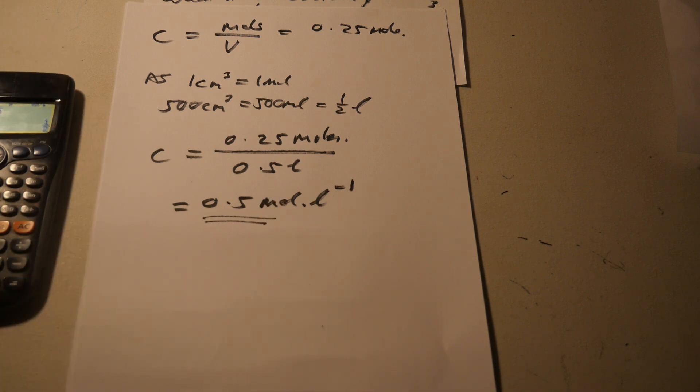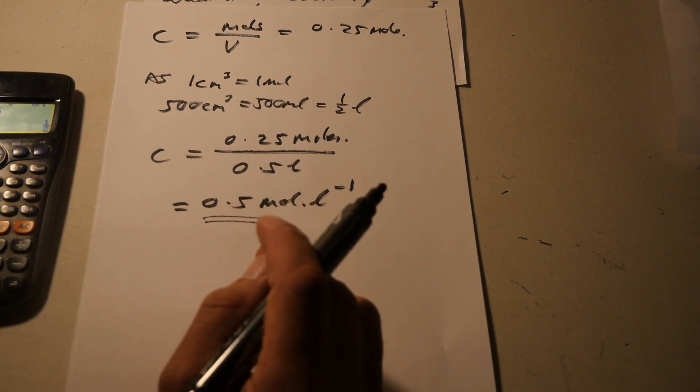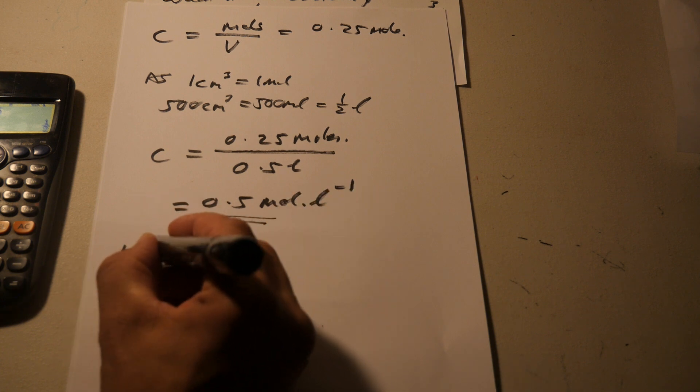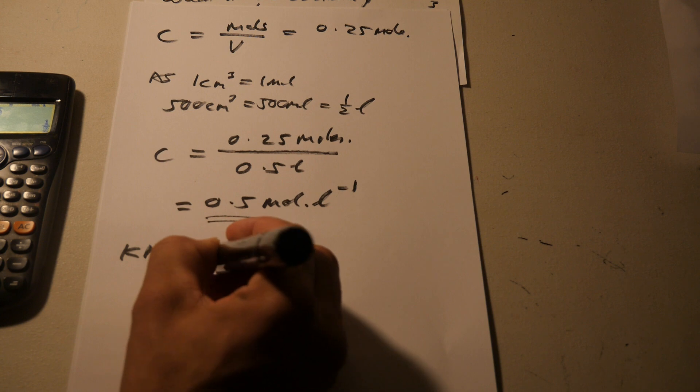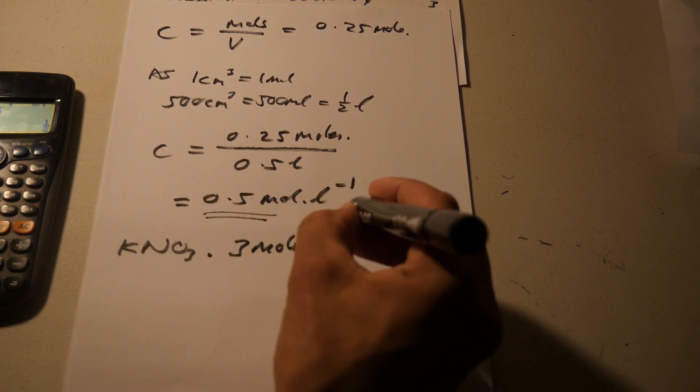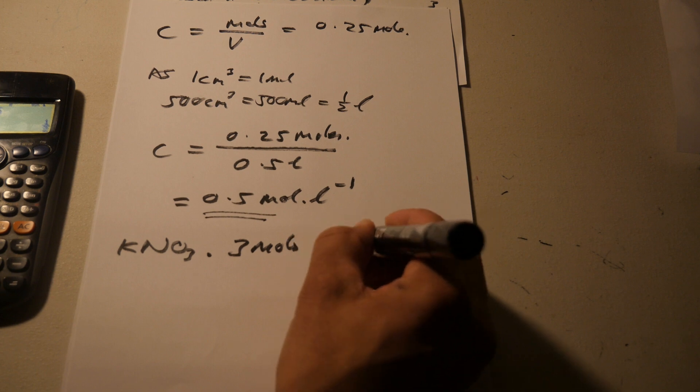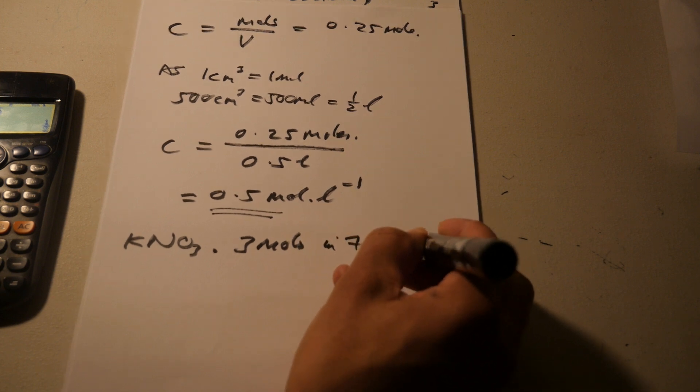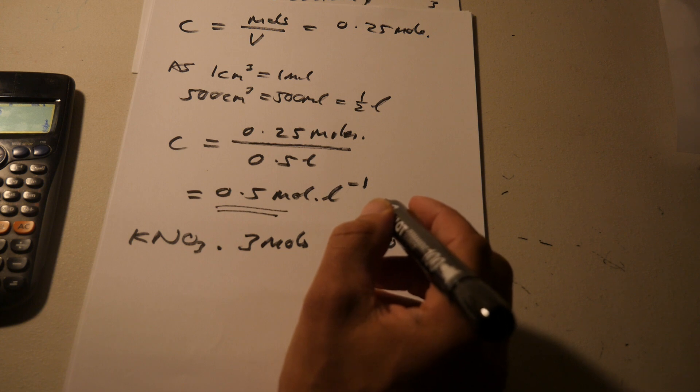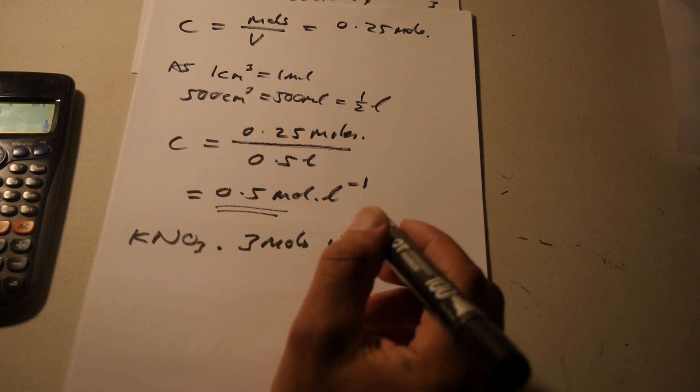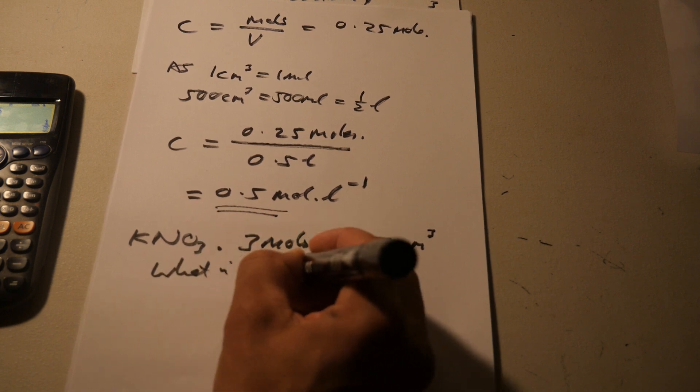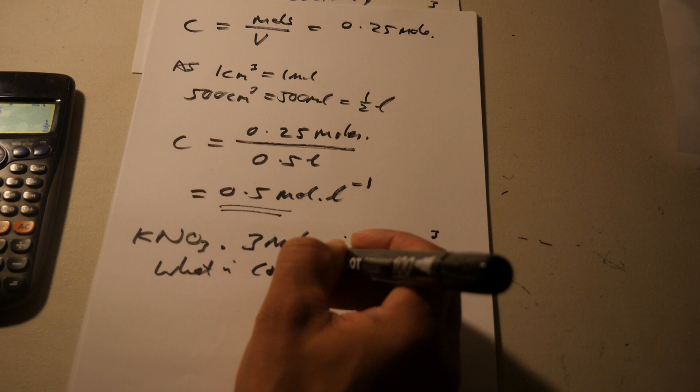Another example, if you have potassium nitrate, you have 3 moles in 750 centimeters cubed, a solution. What's the concentration? What is the conch? So we'll have the concentration.